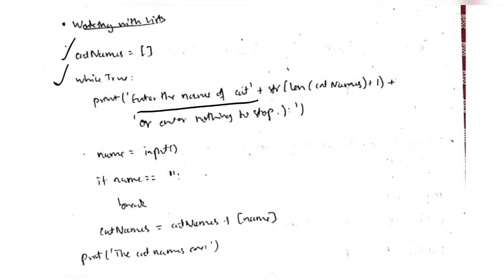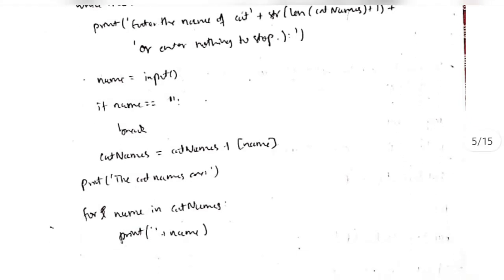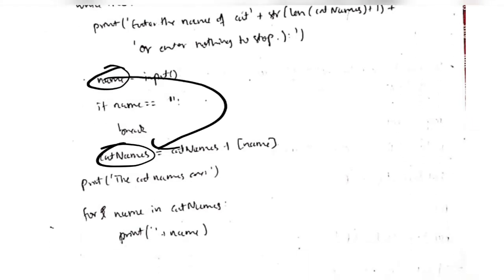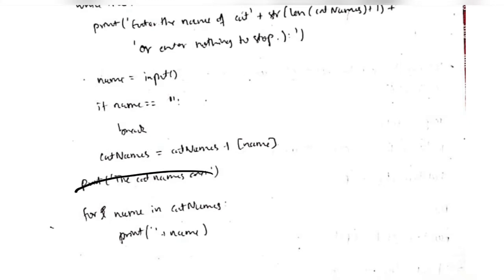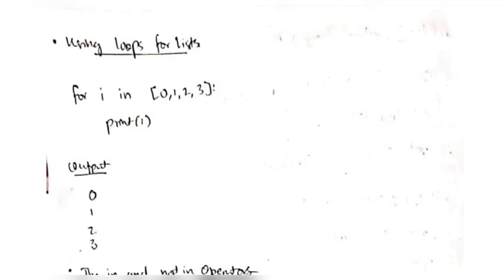The input keeps coming until you enter nothing — if you input nothing and click enter, it will stop. Whatever name you enter, like 'cat', 'bat', or any other name, gets stored in the variable 'name'. If the input is null, it breaks. All the names entered will be concatenated with 'cat_names', so all the cat names will be present in the list. Using a for loop — for i in this list, print i — it will iterate from 0, 1, 2, 3 and print those values.